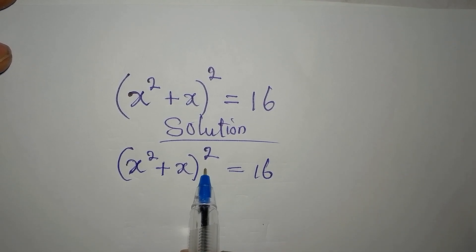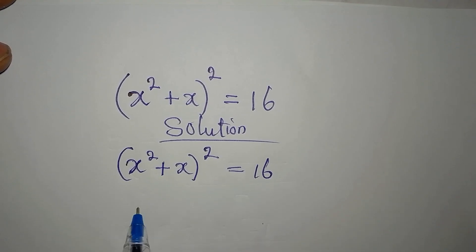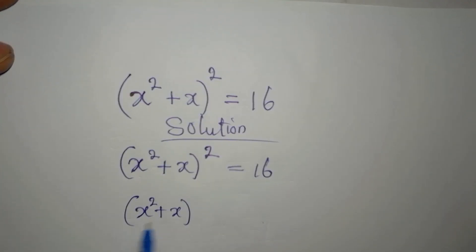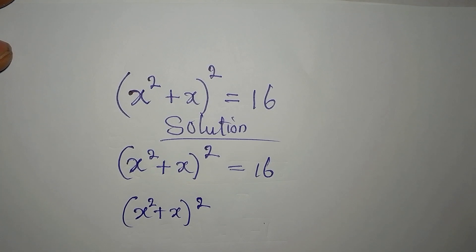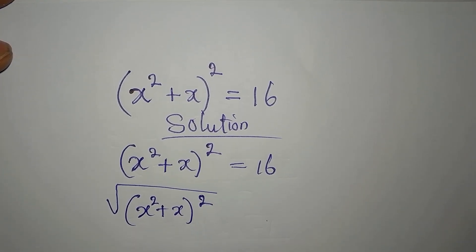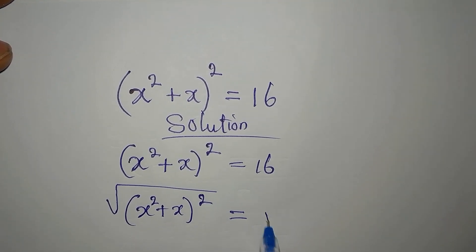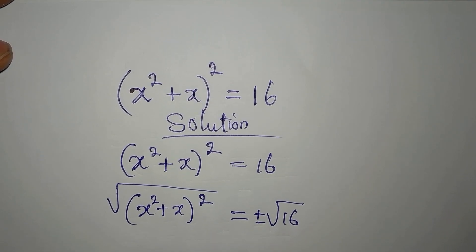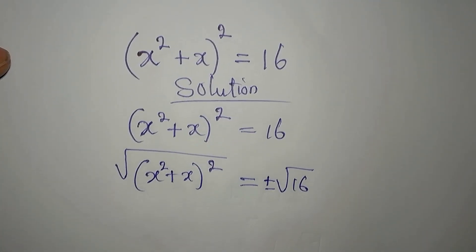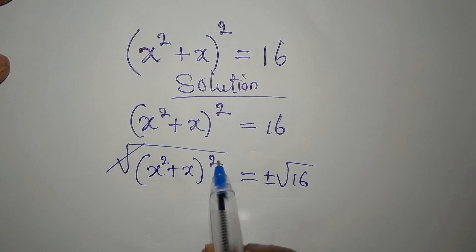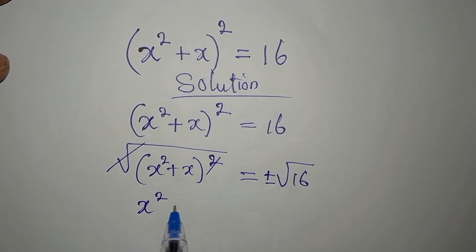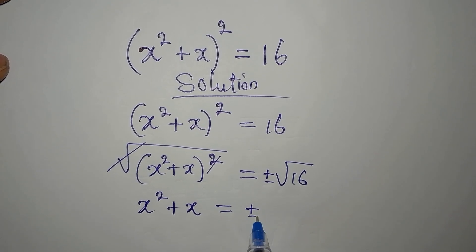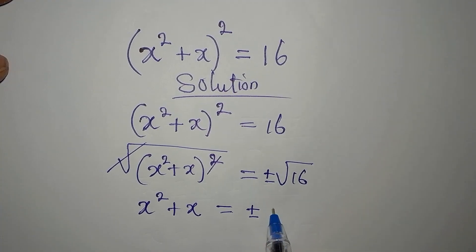The first attempt, the first step is to remove this square. To remove that square, we have to take the square root of everything. Then we have to take the square root of 16, but plus or minus on the right. The next step, this goes with this.